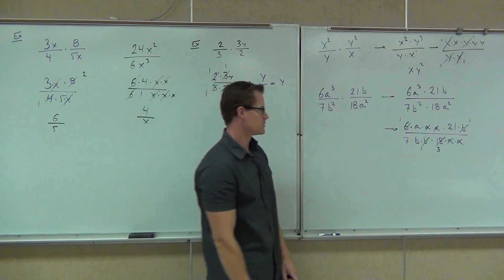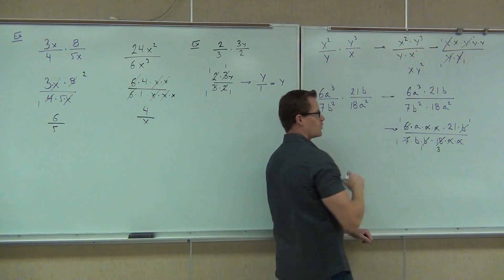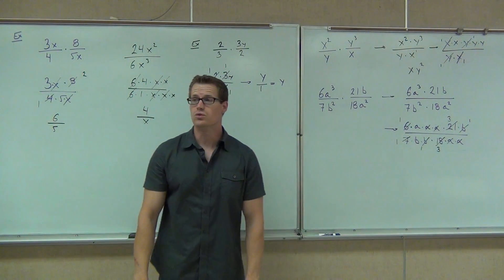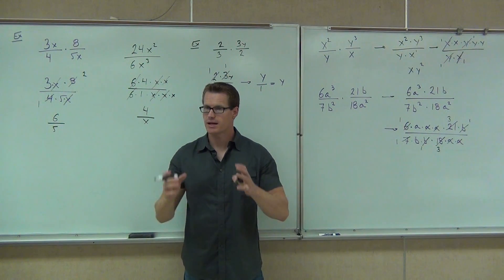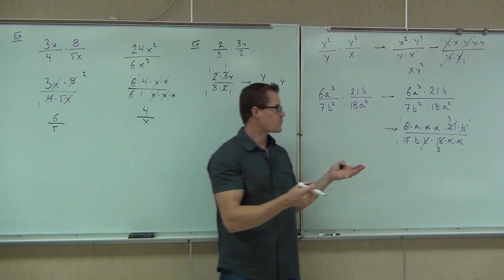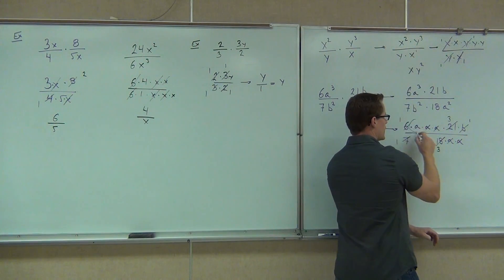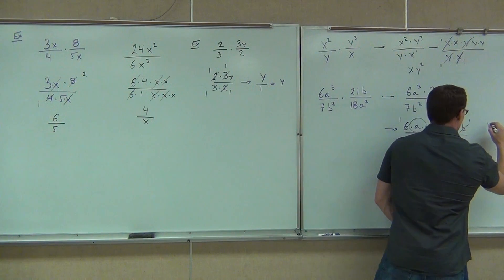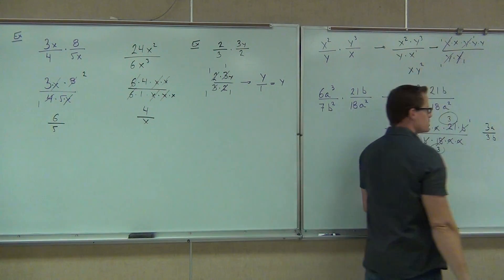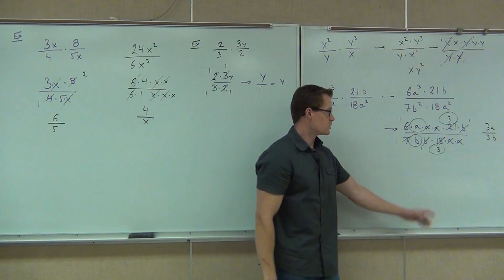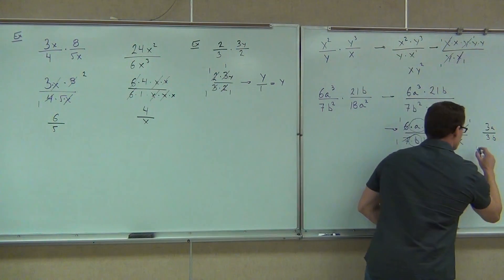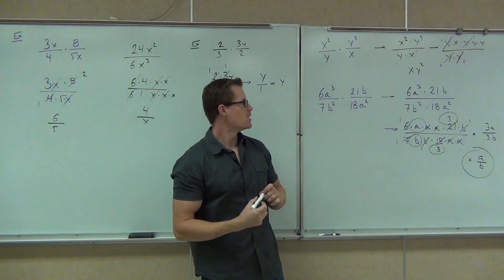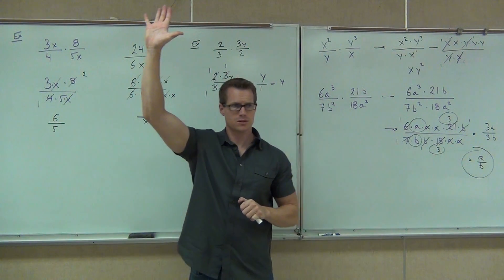Then we have seven. Seven goes into seven one time, and seven goes into 21 three times. We're not quite done yet, because we would have right now a three over a three. If you were to write this fraction, you would get three A over three B. Can you simplify the threes? Yes, absolutely. You could have actually simplified those threes earlier. So in either case, we're going to get A over B. That's our answer.